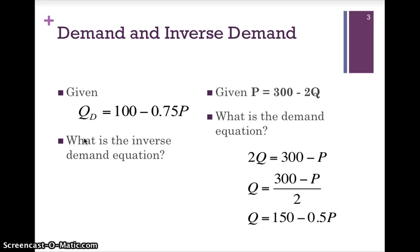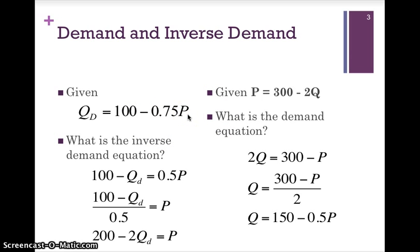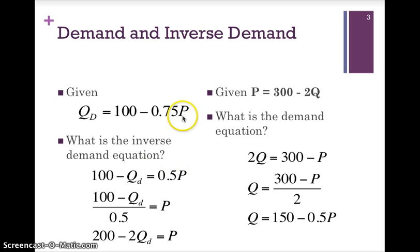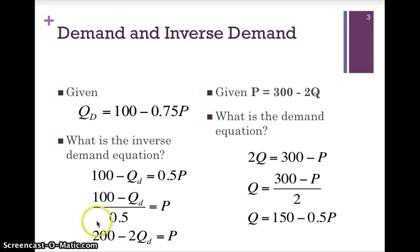To get price positive, we carry it over the equal sign. This gives us 100 minus QD equals 0.5P. Price is now positive but not yet alone. To get P alone, we divide both sides by 0.5: 100 minus Q divided by 0.5. We end up with P equals 200 minus 2Q — the inverse demand function, with price now the subject of the formula.